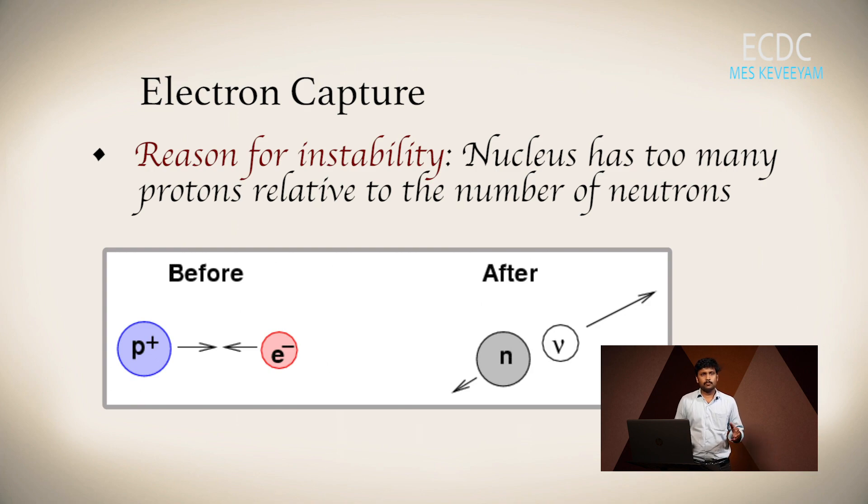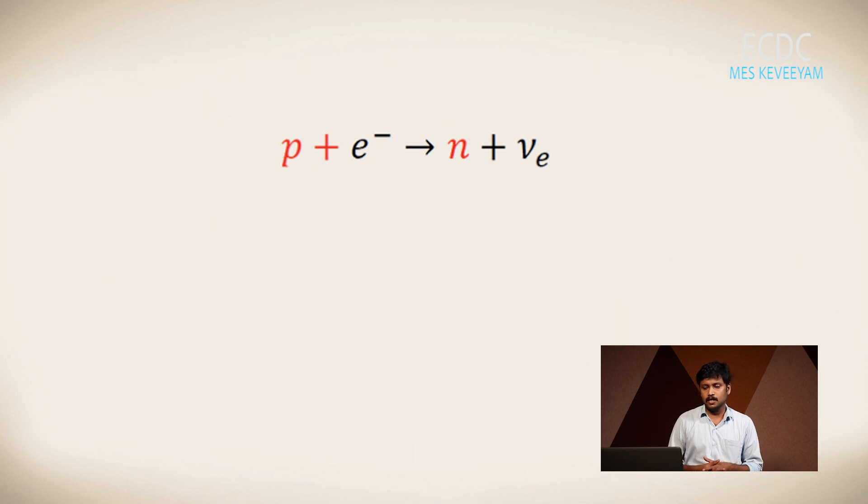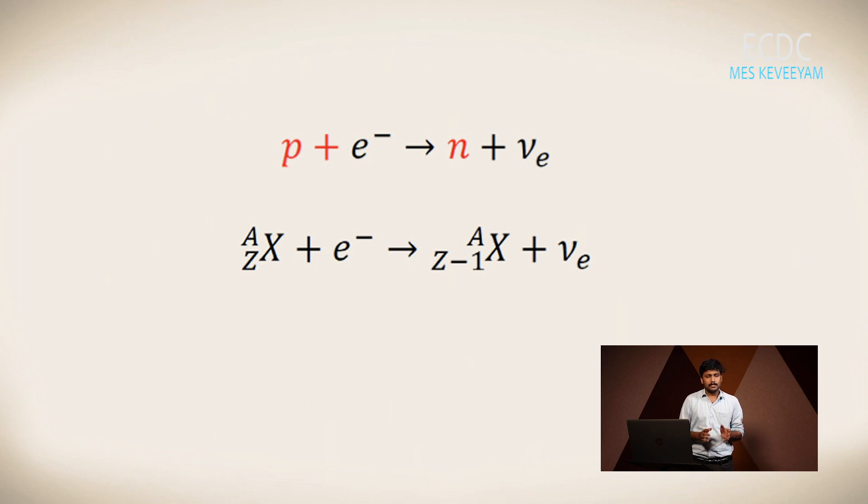If there are too many protons relative to the number of neutrons, the most probable procedure is electron capture. Here, the proton will absorb an electron and therefore change to a neutron. The process is: proton plus electron gives neutron plus neutrino. As a proton changes to a neutron, the atomic number will decrease by one. Another process is positron emission.